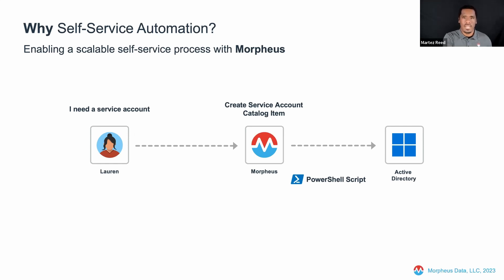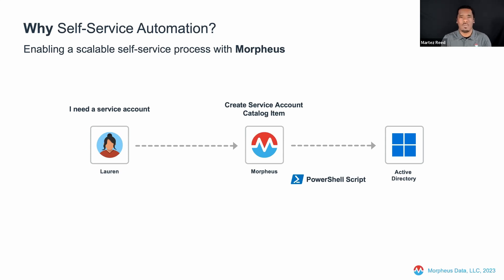It benefits Lauren in that she's able to reduce her reliance on Jane — eliminating the synchronous communication from a response standpoint. And then additionally, Jane is no longer in the business of having to run automation scripts. It benefits the organization because if you scale this example out, not only could it be Lauren — it could be Jim or Steve or whoever needs to create a service account. The organization has been enabled to scale that automation because Jane is no longer in the middle of the process to fully automate the end-to-end steps.